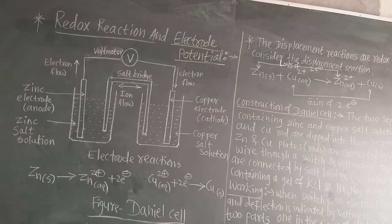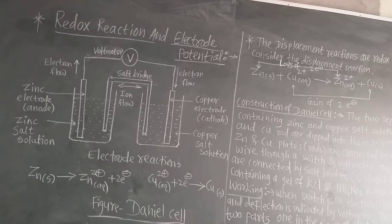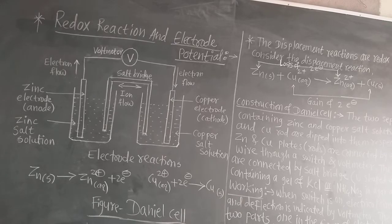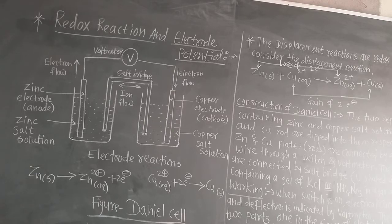We can determine zinc is more reactive from the electromotive force series. In the EMF series, the more reactive elements are below hydrogen — their electrode potentials are listed there. Hydrogen is in the middle, and the less reactive elements are above hydrogen. So elements above hydrogen are less reactive than those below hydrogen.